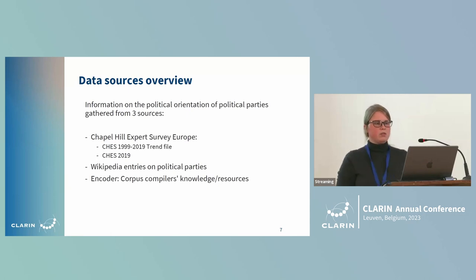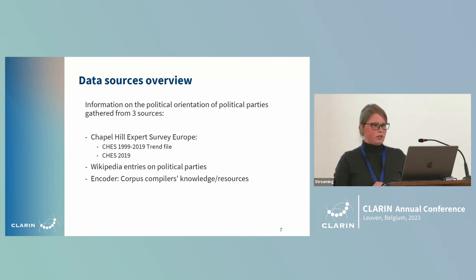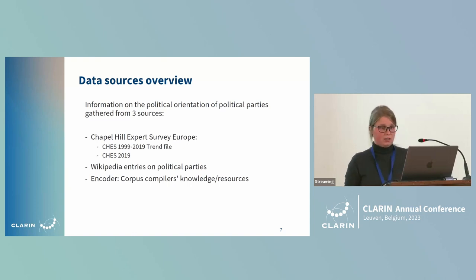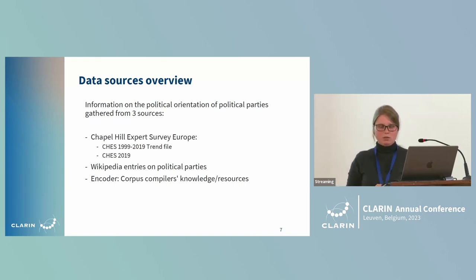We looked into different sources that could provide us with this metadata. We gathered information on political orientation of political parties from three different sources: the Chapel Hill Expert Survey Europe (CHES), Wikipedia entries on political parties, and an option for corpus compilers to add their own knowledge to our corpora. For CHES we used two separate files: the CHES trend file covering 1999 to 2019, and additionally a separate CHES 2019 file since some values were omitted from the trend file.